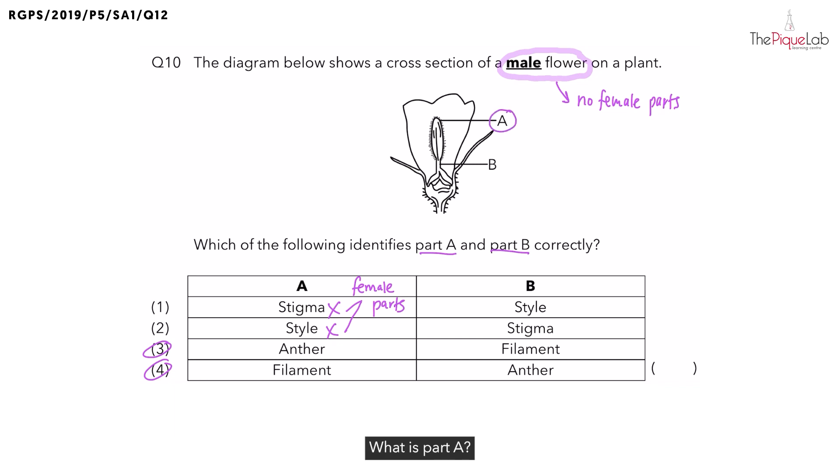What is part A? Part A is the structure that produces and stores pollen grains. What is the name of that structure? That structure is the anther.